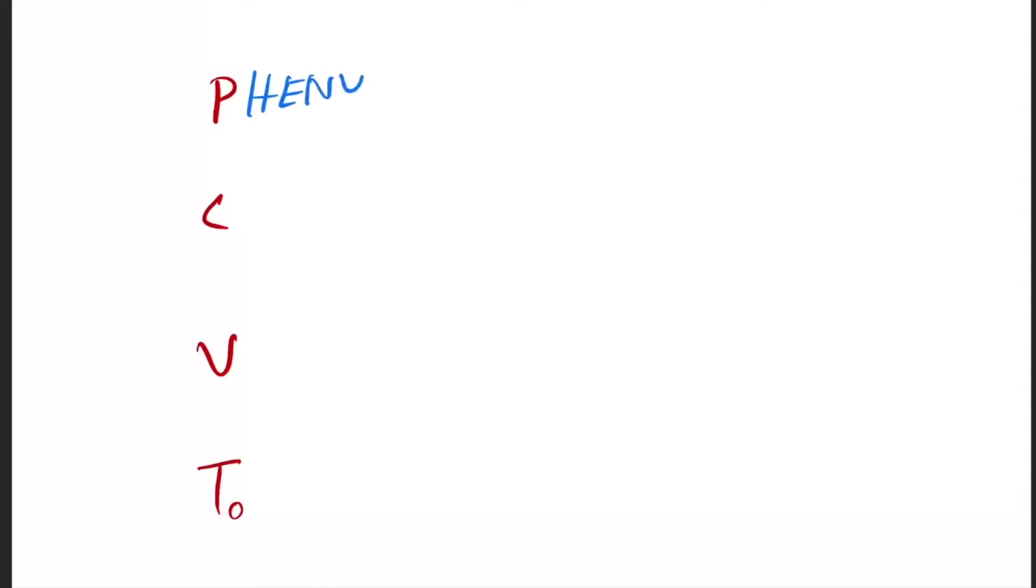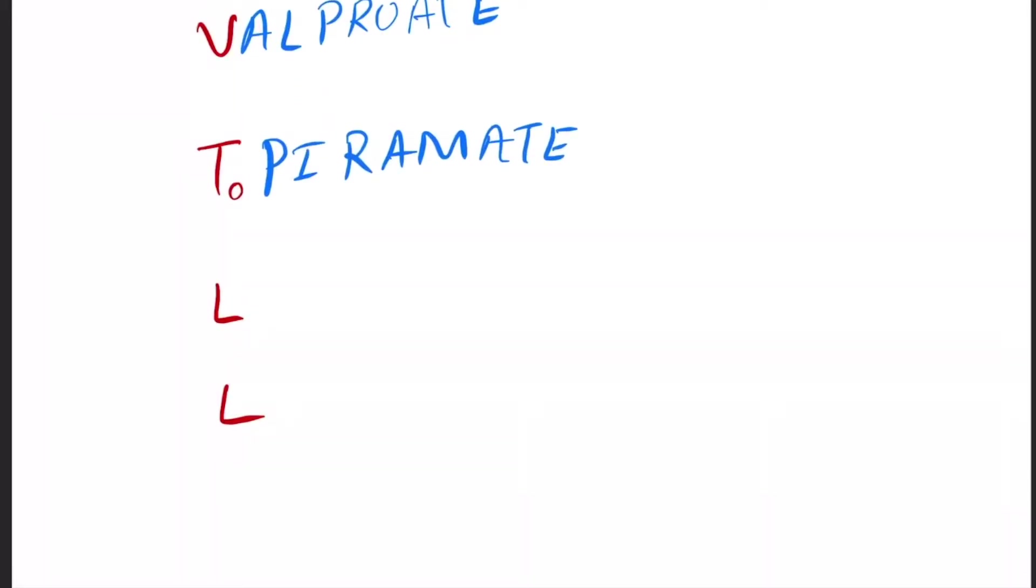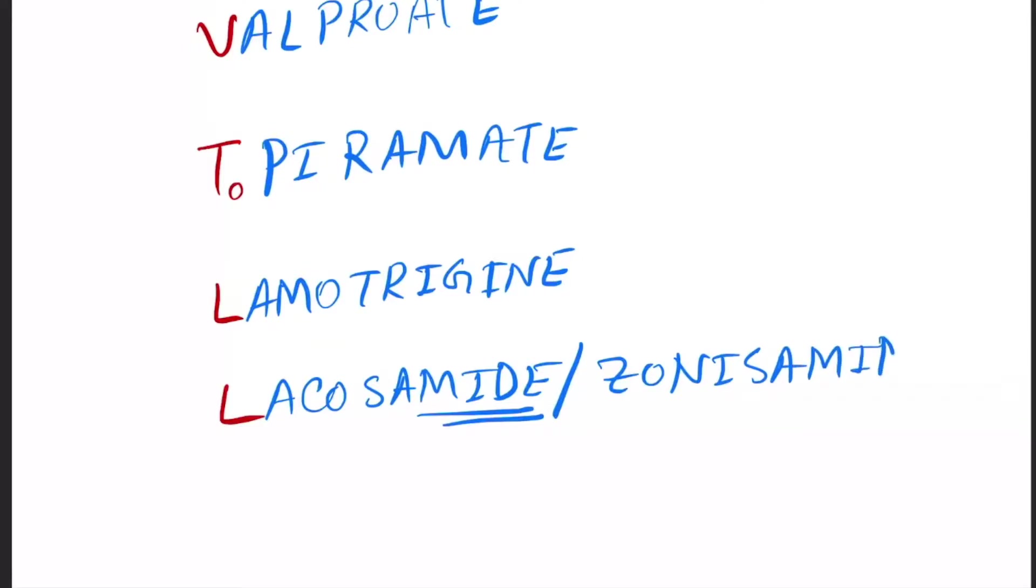And the name of the drugs: first P for phenytoin, next is carbamazepine, V is valproate, next TO for topiramate, L is lamotrigine, L is lacosamide, zonisamide - you can remember by 'mide' that is zonisamide, then the other one is rufinamide.